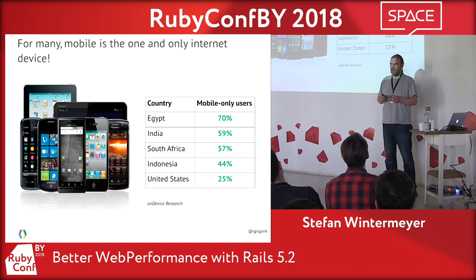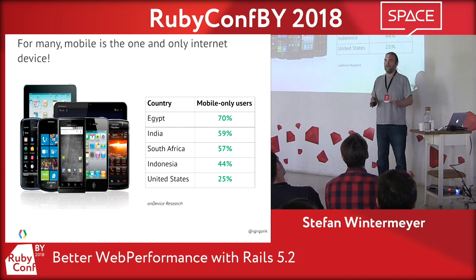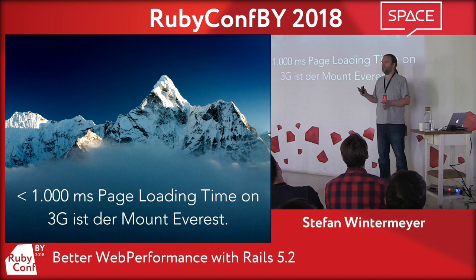That's the most important thing to remember because otherwise you get disappointed in your clients. For most people, the mobile device became the number one device to go to the internet. That's very important to know because you want to achieve 1,000 milliseconds on a 3G network, because that's still the most popular network.